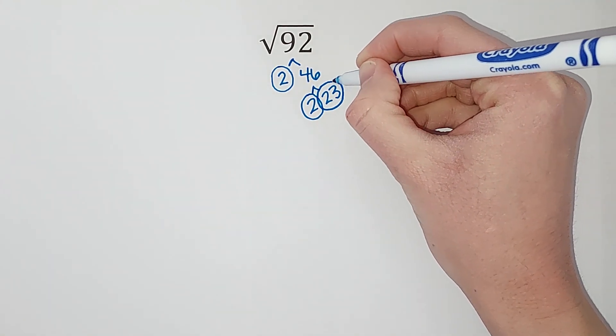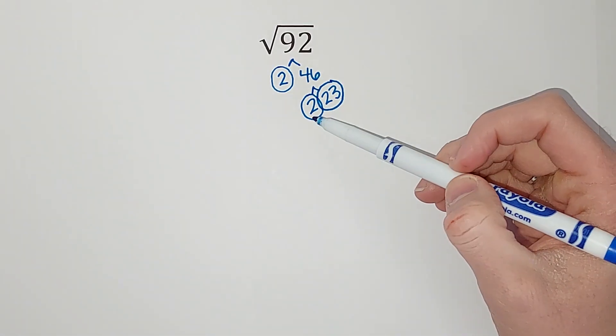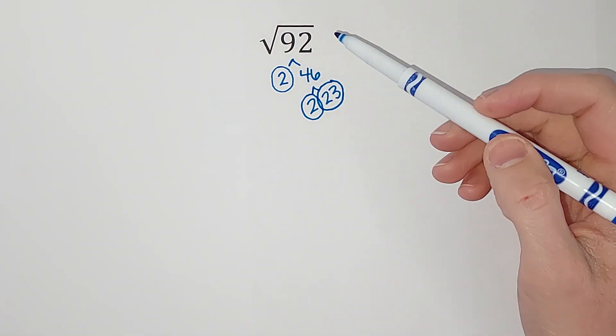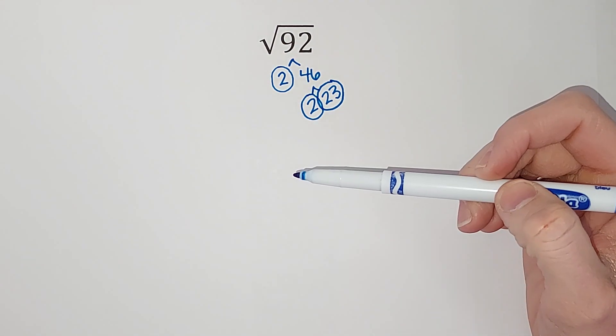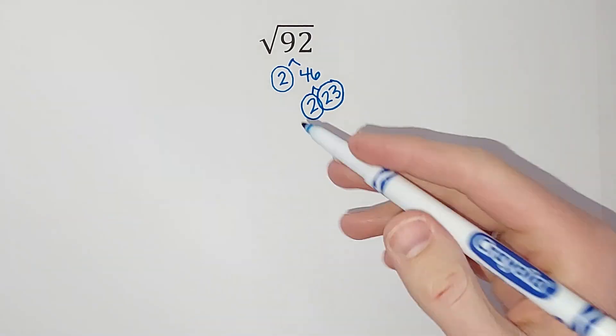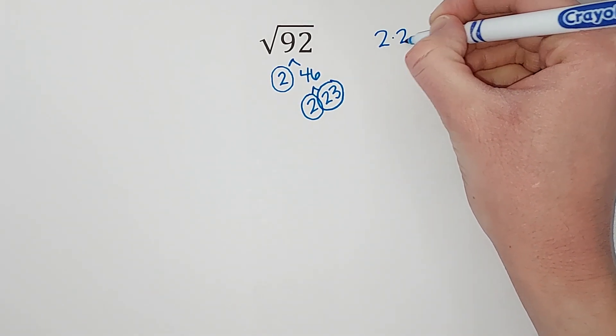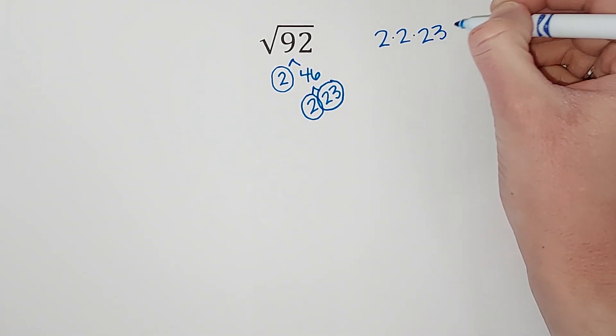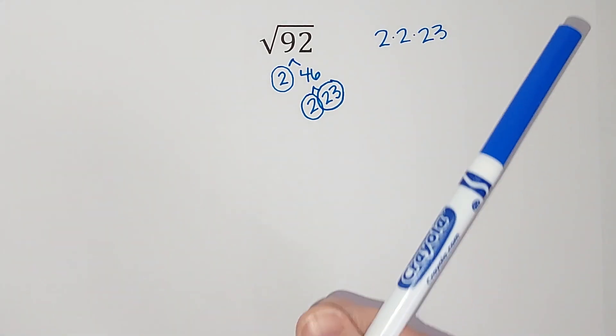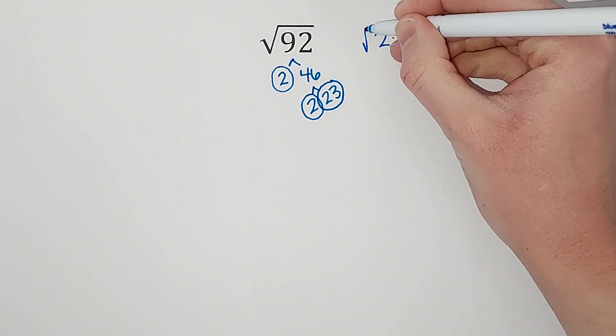So now what I'm seeing here is two twos, which means with my square root I can pull one of these twos out. I'll show you what I mean. So 92 can be written as 2 times 2 times 23. That's the prime factorization of this number. This equals 92 under my square root, right?